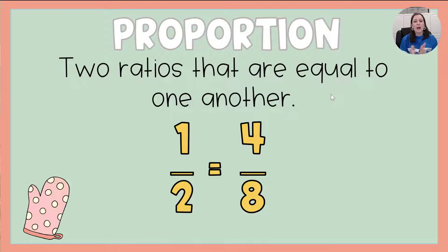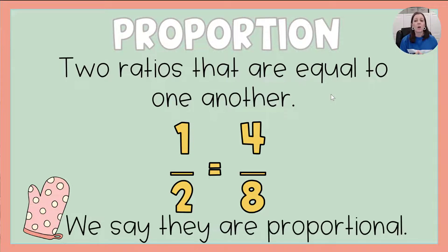So an example of that, 1 to 2 and 4 to 8, those are equivalent because we know 1 times 4 is 4 and 2 times 4 is 8. So we would say that these ratios are proportional.